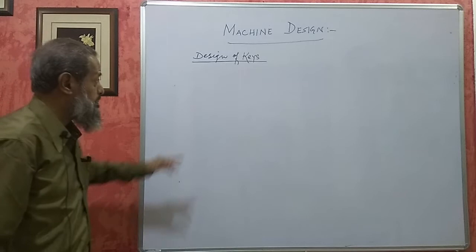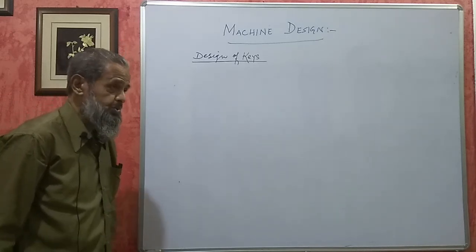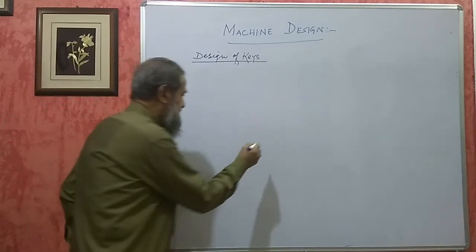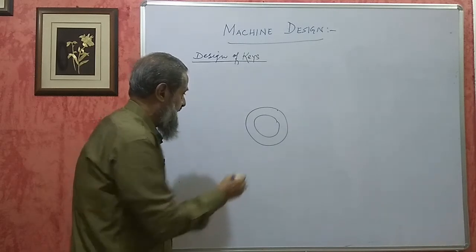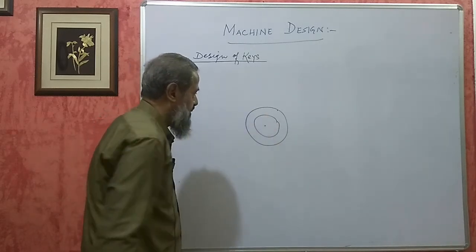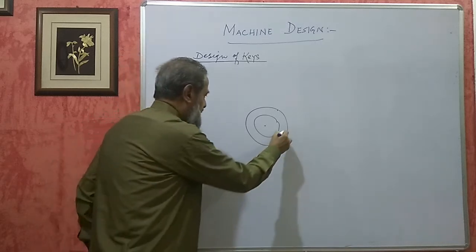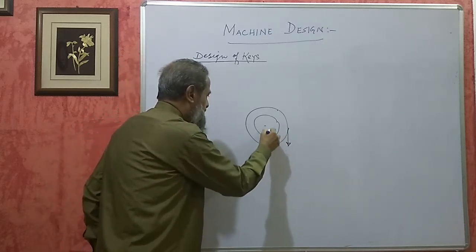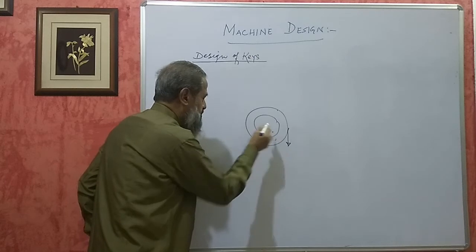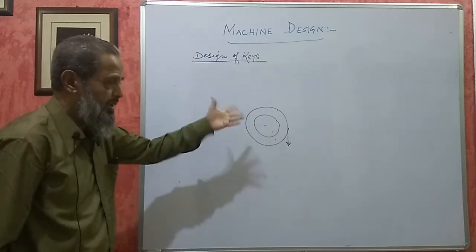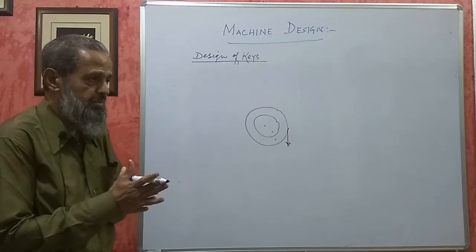Today let us take up design of keys. Keys are used in shafts — generally shafts are circular. We have a gear wheel or a pulley, and we mount it on the shaft. Because this is circular, we make a circular hole in the hub of the pulley or gear. When load is acting on it, there will be slipping — relative motion between these two parts — and the power will not be fully transmitted, because both parts will not be rotating at the same speed.